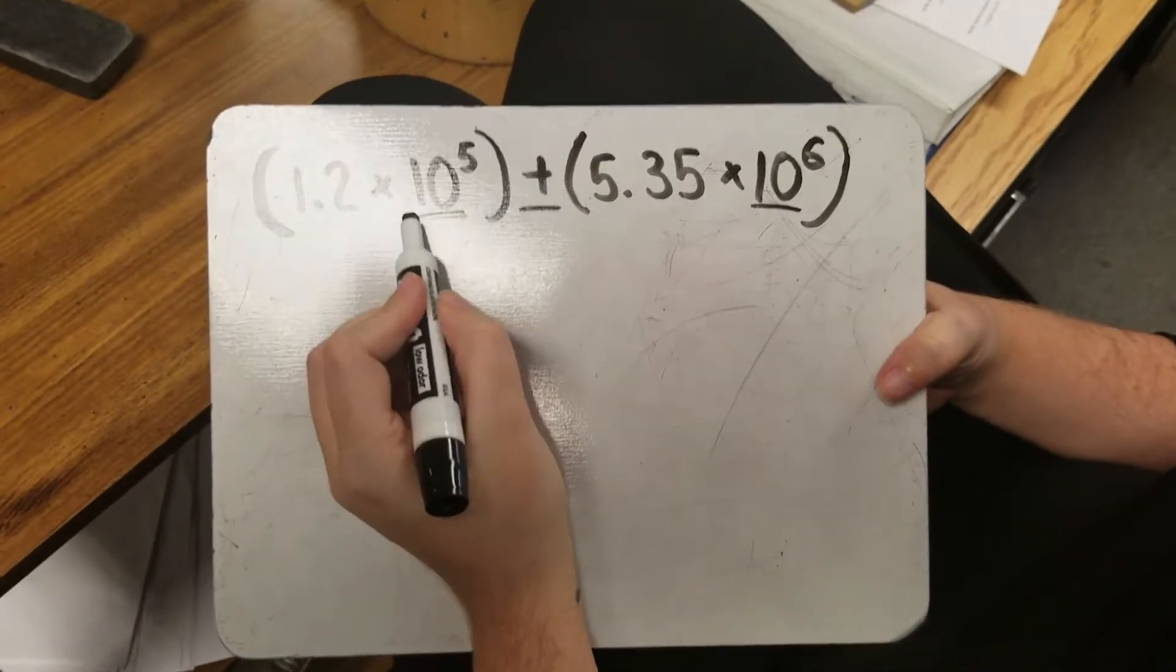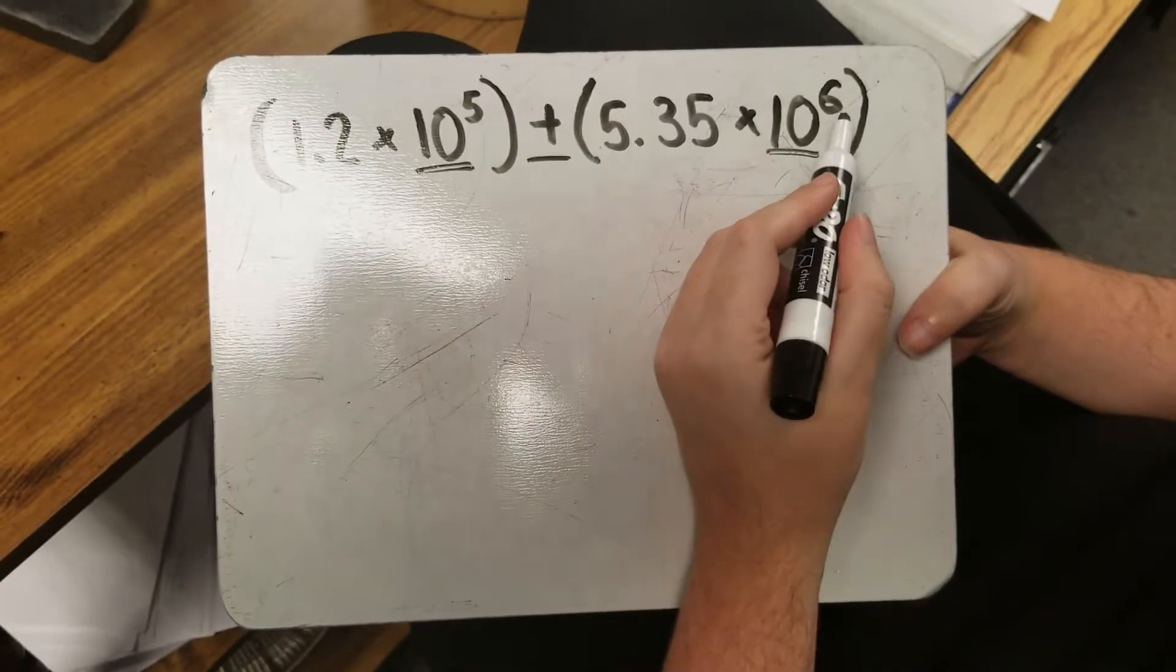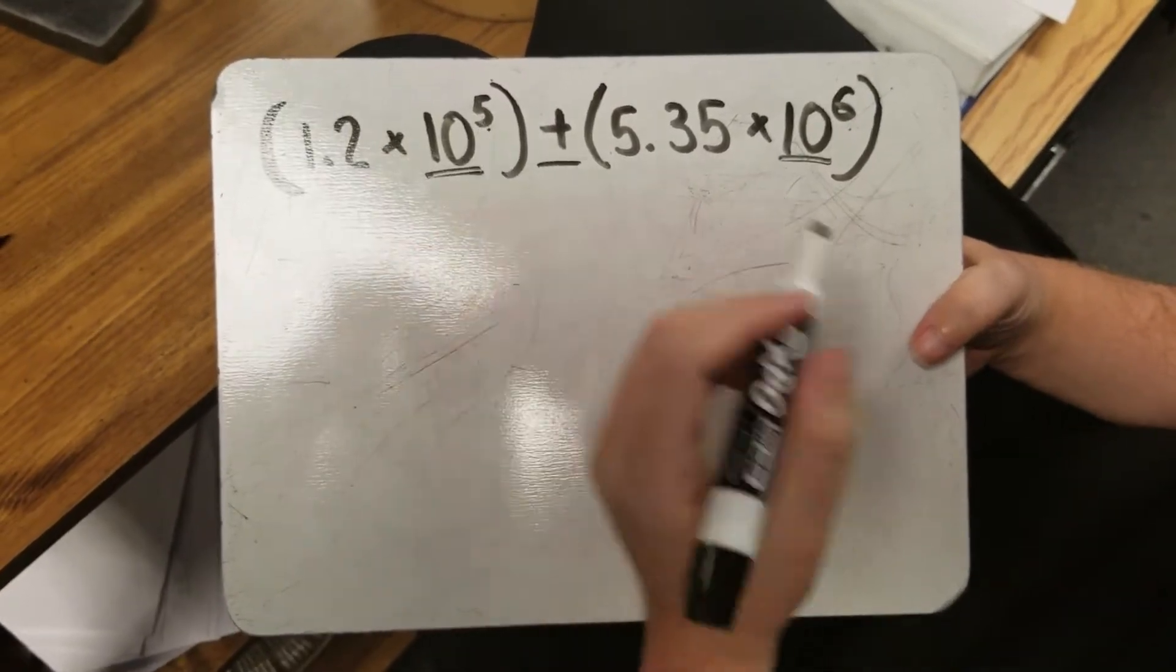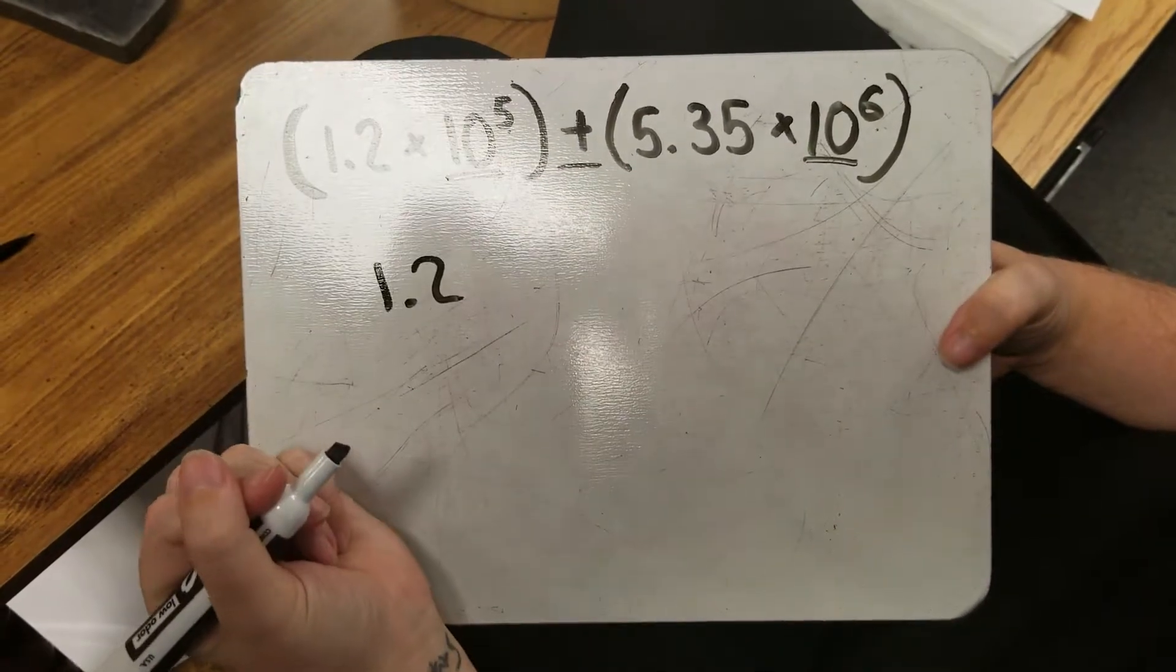Okay, so we're adding and subtracting, which means we have to create like bases. Multiplying and dividing, we do not. So you can either turn this down to a 5 or make this up to a 6. I like to move mine up because that's going to cause me less problems later.